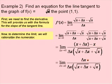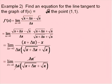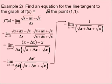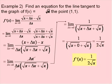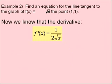From here we have some algebraic simplifications: x and minus x cancel out in the numerator, leaving just delta x. We cancel the delta x from numerator and denominator, then replace delta x with 0. In the denominator, that leaves square root of x plus 0 plus square root of x, which simplifies to 2 square root of x. So our derivative is 1 over 2 square root of x.